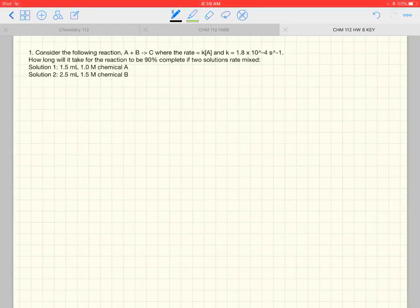All right, here's question one. Consider the following reaction: A plus B goes to C, where the rate is equal to K times A to the first power. So it's first order with respect to A and zero order with respect to B and first order overall. And we are asked to figure out how much time it takes for the reaction to be 90% complete.